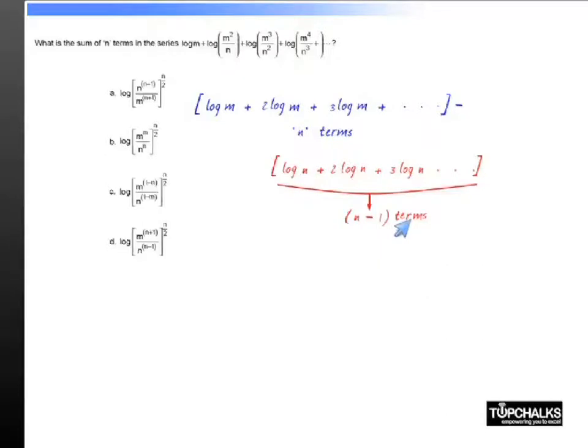These two expressions can now be simplified and written as log m into 1 plus 2 plus 3 till n terms, that is n into n plus 1 by 2, minus log n into 1 plus 2 plus 3 so on till n minus 1 terms, so you will have n minus 1 into n by 2.